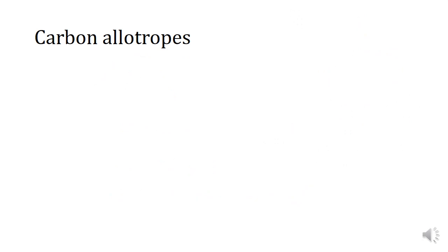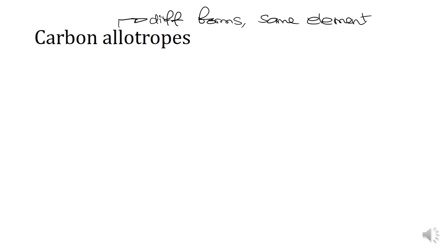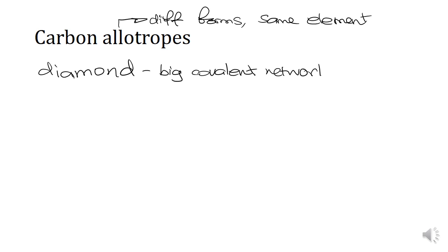Allotropes are different forms of the same element. One form of carbon is diamond, which is a large covalent network lattice. Those covalent bonds make it incredibly strong, and it takes so much energy to break apart a diamond that it effectively sublimes.